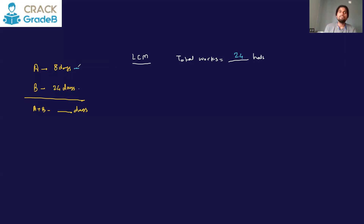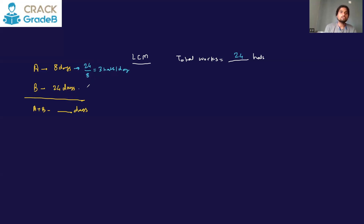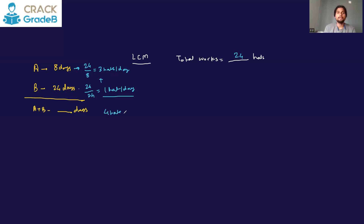So we take 24 units as the total work. If A makes 24 units in 8 days, every day he is making 24/8 = 3 units per day — this is the efficiency or rate of work of A. B makes 24 units in 24 days, so his rate is 1 unit per day. Together they make 3 + 1 = 4 units per day.